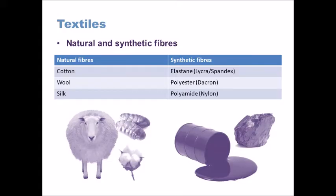Synthetic fibres, which are derived from oil or coal in some cases, generally have a much longer fibre, and these are called filaments. Filaments can be made into yarns more easily because they don't need to be spun initially — when they are extracted from the oil or coal they come in filament form.